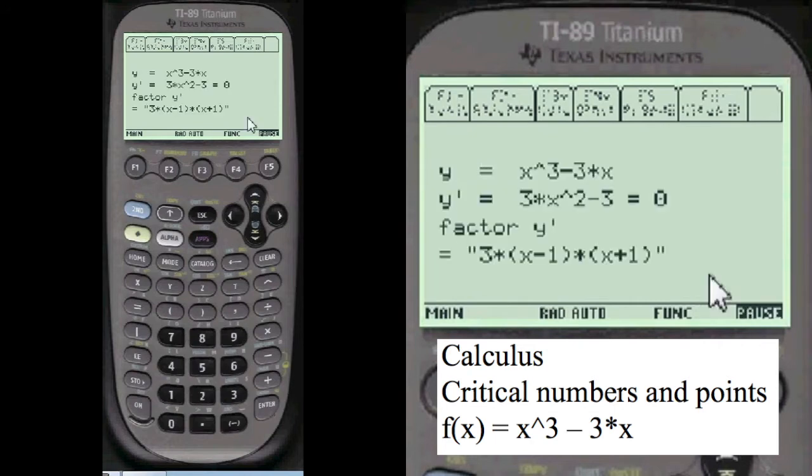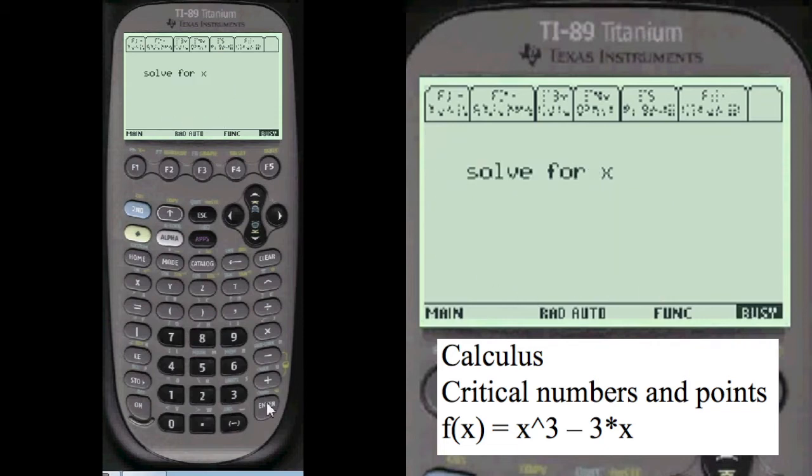And I always have you start a graph on your paper, but we're going to enter the function. You have to press alpha before you enter anything into this entry line here. And we're going to press alpha, and the problem is x cubed minus 3 times x.